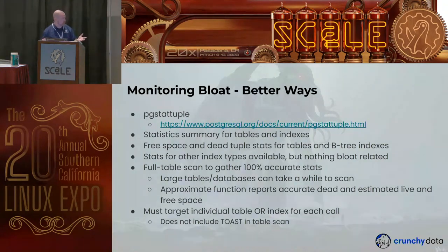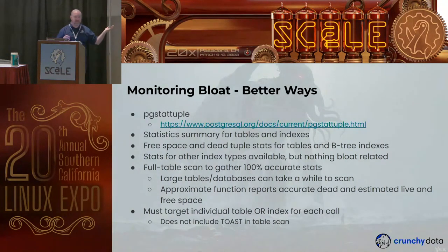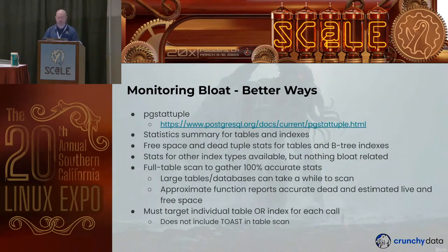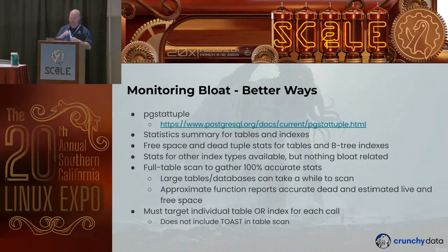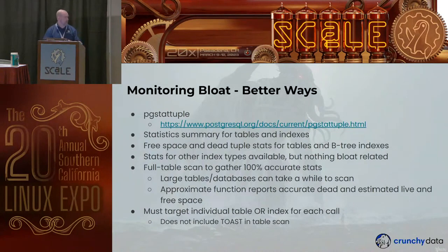I talked to people at conferences and found out about a better tool: pgstattuple, an extension that comes with the Postgres contrib modules. It's maintained by the Postgres core team. What it does is provide statistics for the tuples and indexes in a given table, showing you free space and dead space for tables and btree indexes. It also provides statistics for other index types like GIN indexes, but doesn't provide bloat info for those — I haven't been able to find a way to measure bloat in GIN or GiST indexes.